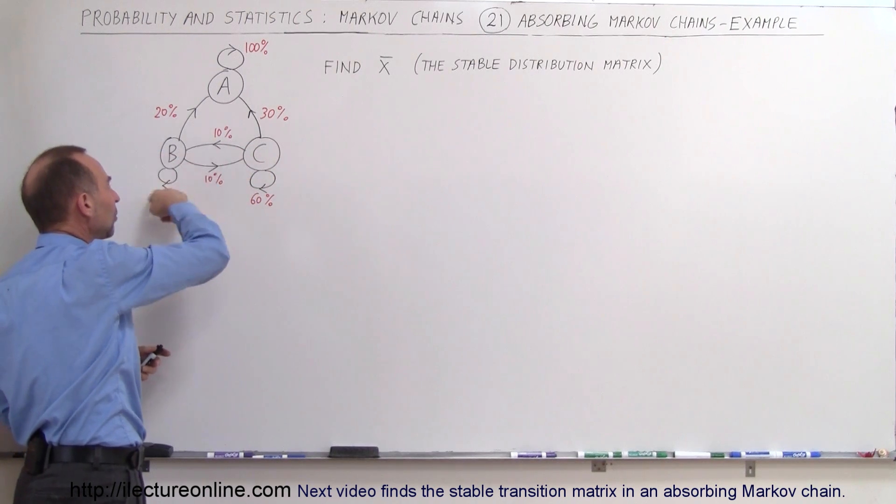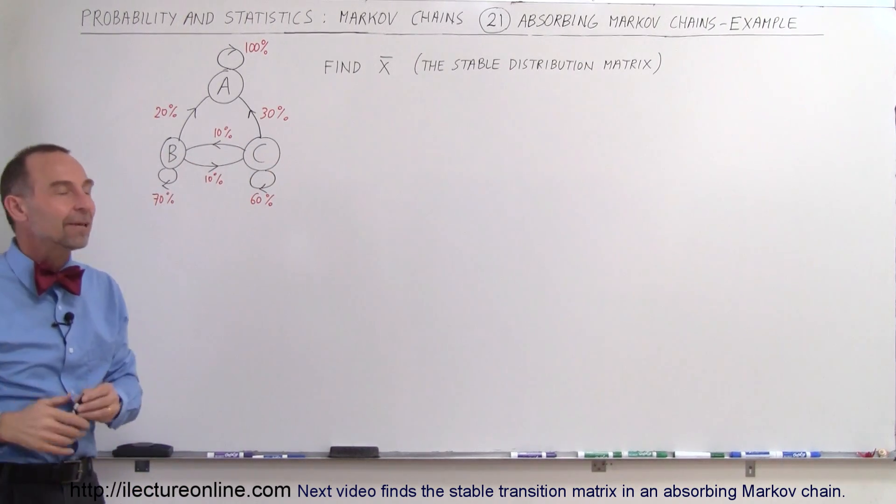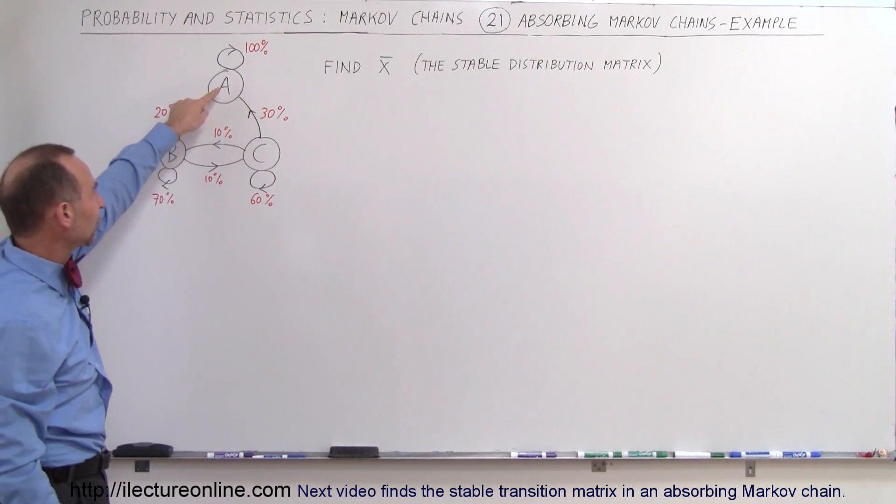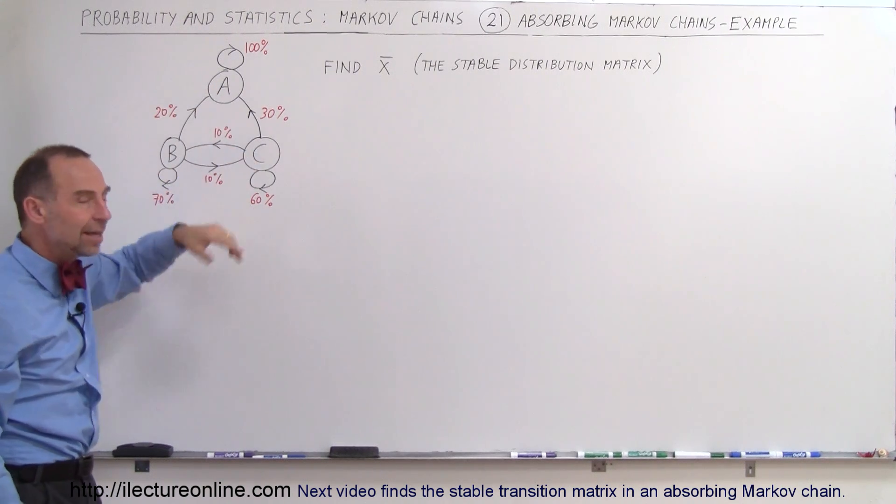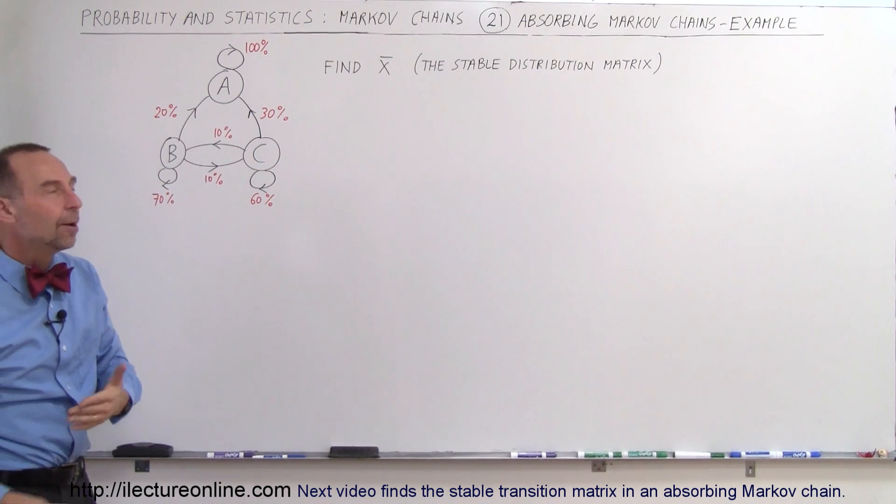Some will go between B and C, and some will remain at B and some will remain at C. But since none of the customers will ever go back from A to B or from A to C, this is what we call an absorbing Markov chain.